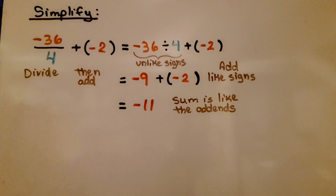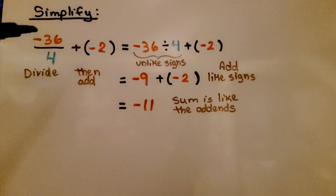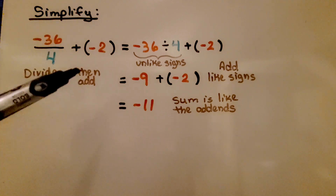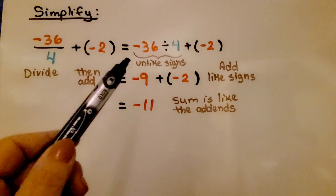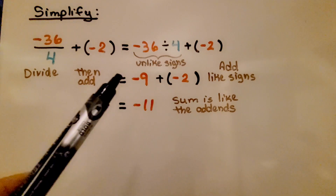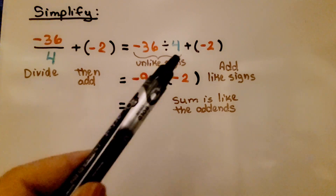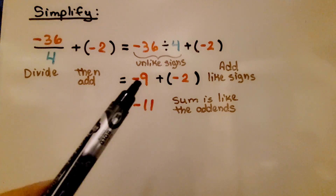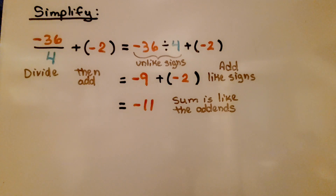Here we simplify negative 36 divided by 4 plus negative 2. Remember, division problems can be written as fractions. We divide first, then add. Negative 36 divided by 4 — they have unlike signs — gives negative 9. Now we add negative 2. They have like signs, so the sum is like the addends: 9 plus 2 is 11, giving us negative 11.